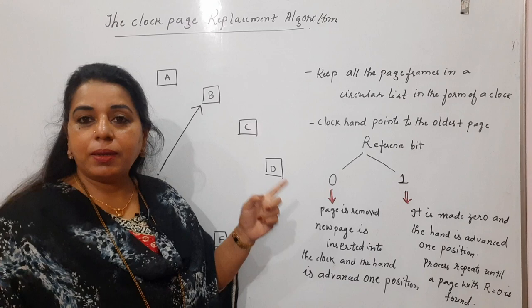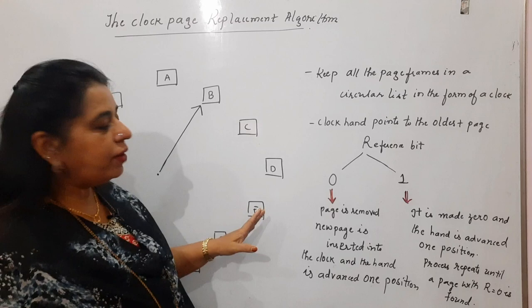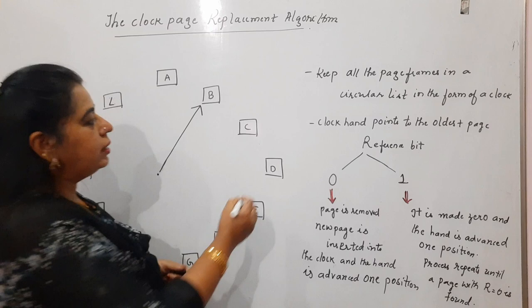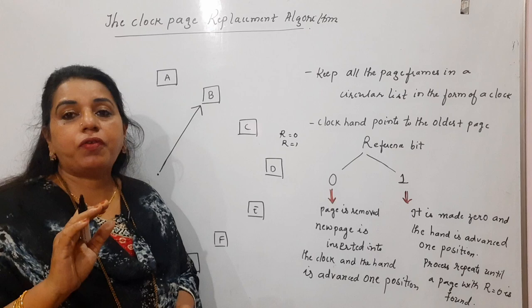The oldest page is the page which entered memory first. The clock hand always points to the oldest page. Now, every page has a value for the reference bit — as seen in the second chance page replacement algorithm, the reference bit is either zero or one. Each page in the circular list carries a value of either zero or one.